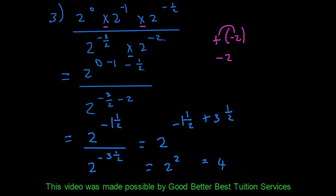Now we can subtract. It's negative 1 and a half minus negative 3 and a half. A negative times a negative is a positive, so that becomes negative 1 and a half plus 3 and a half, giving 2 to the power 2, which equals 4.